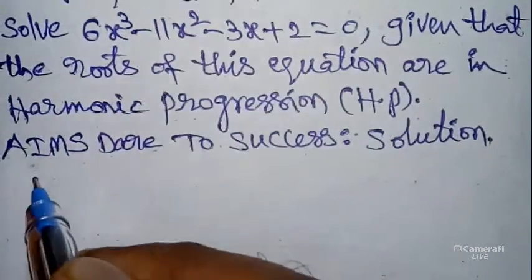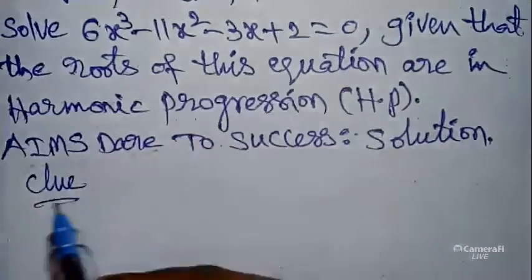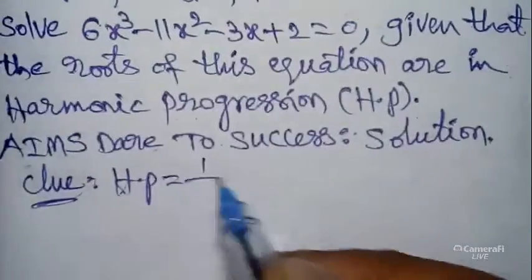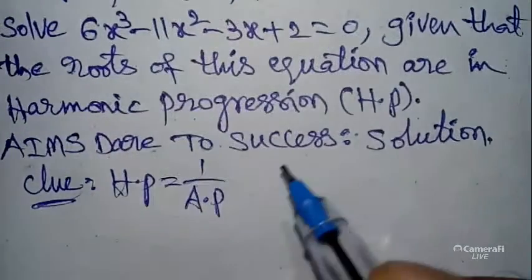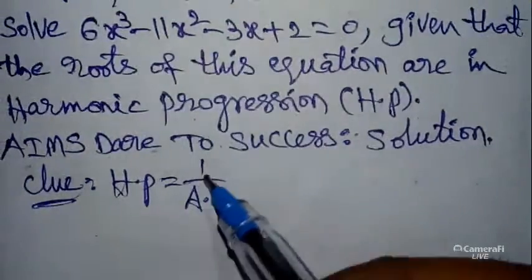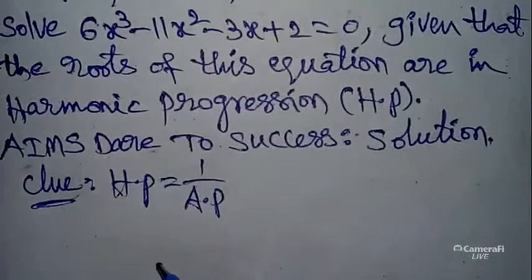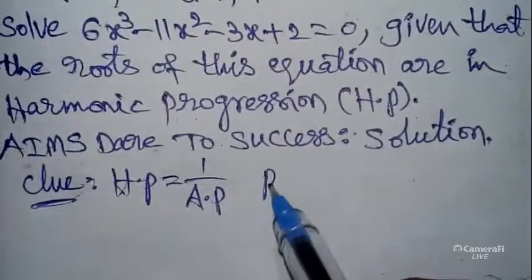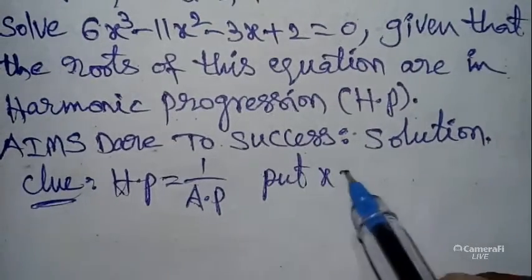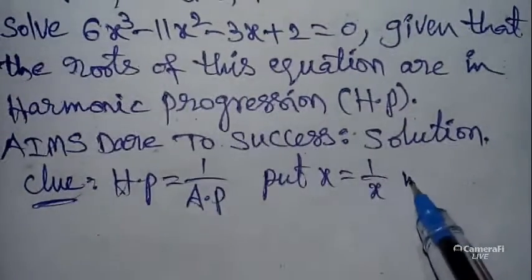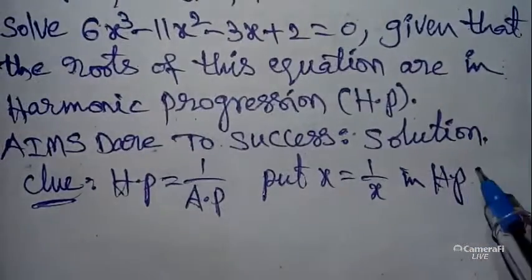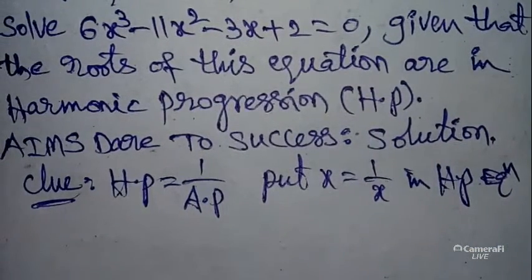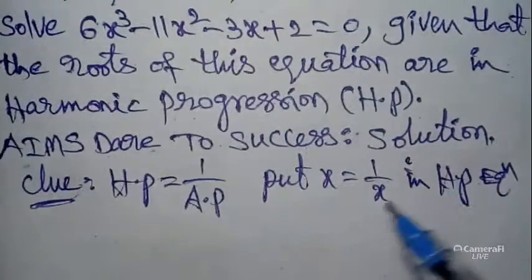Now I wanted to start with my clue. Harmonic Progression and Arithmetic Progression are in reciprocal relationship. HP equals 1 divided by AP. So you can substitute x equals 1 by x in the Harmonic Progression equation and simplify.